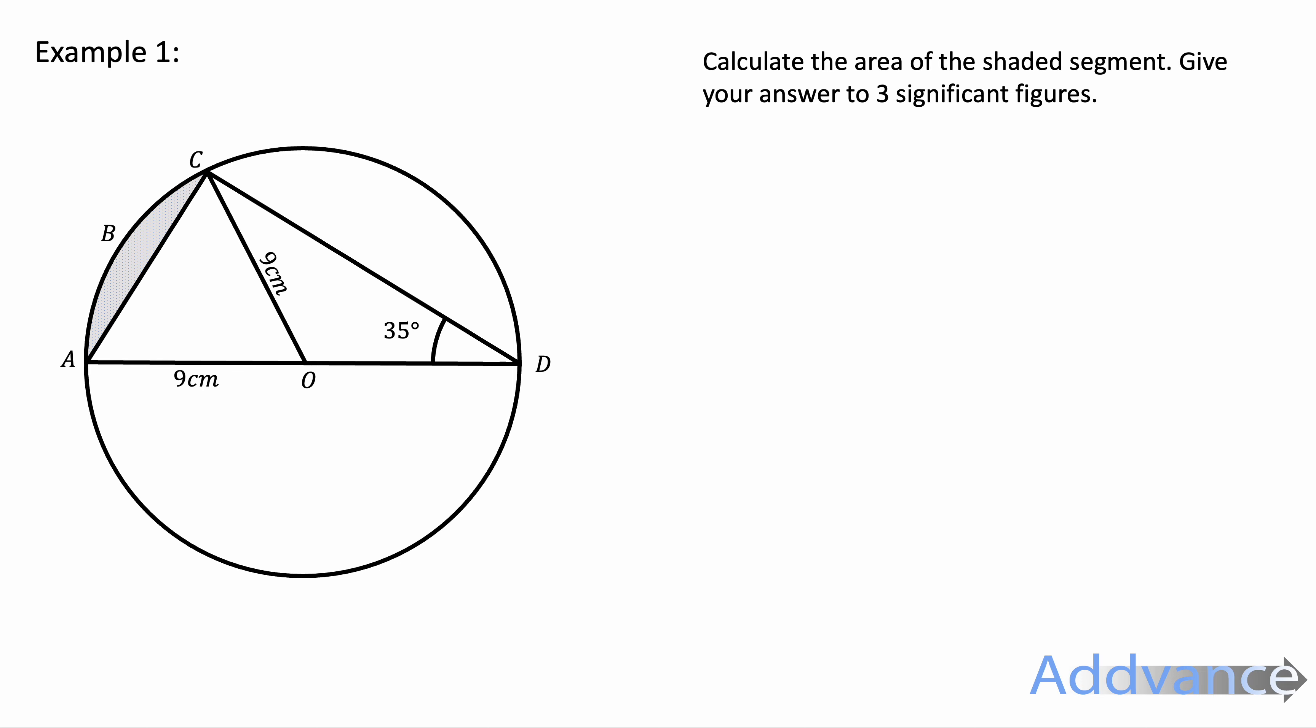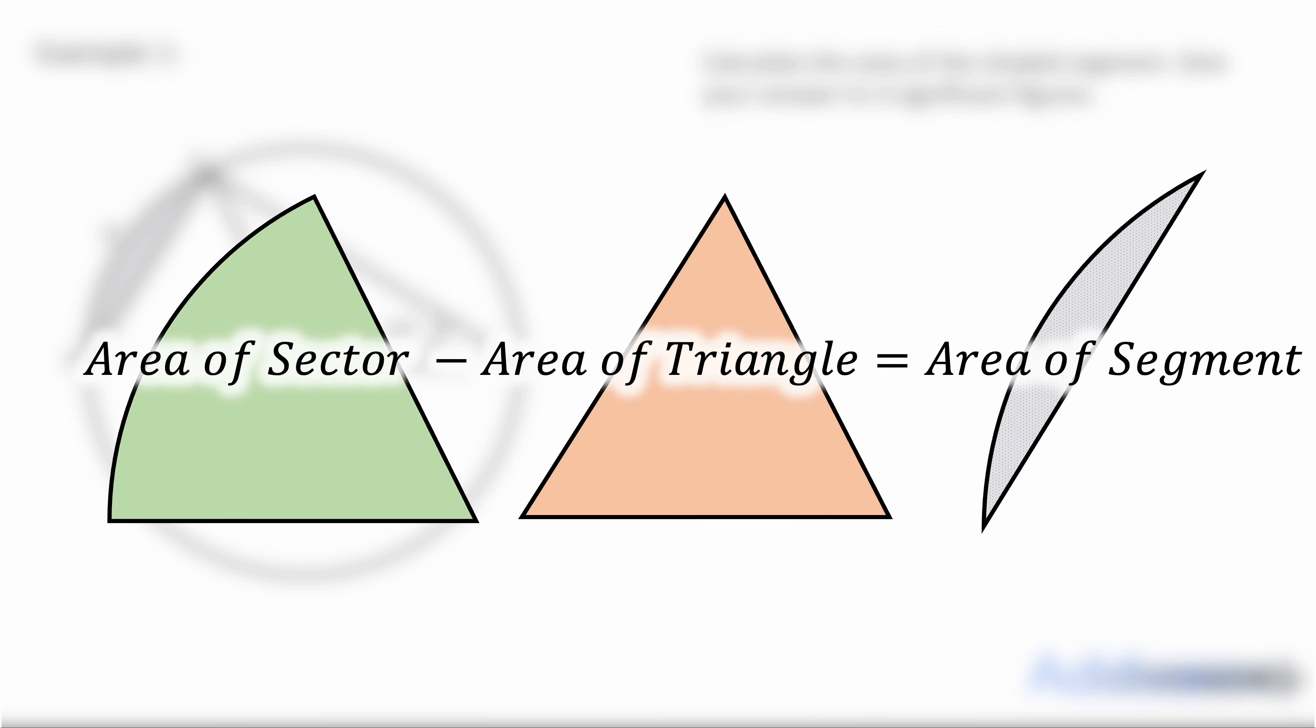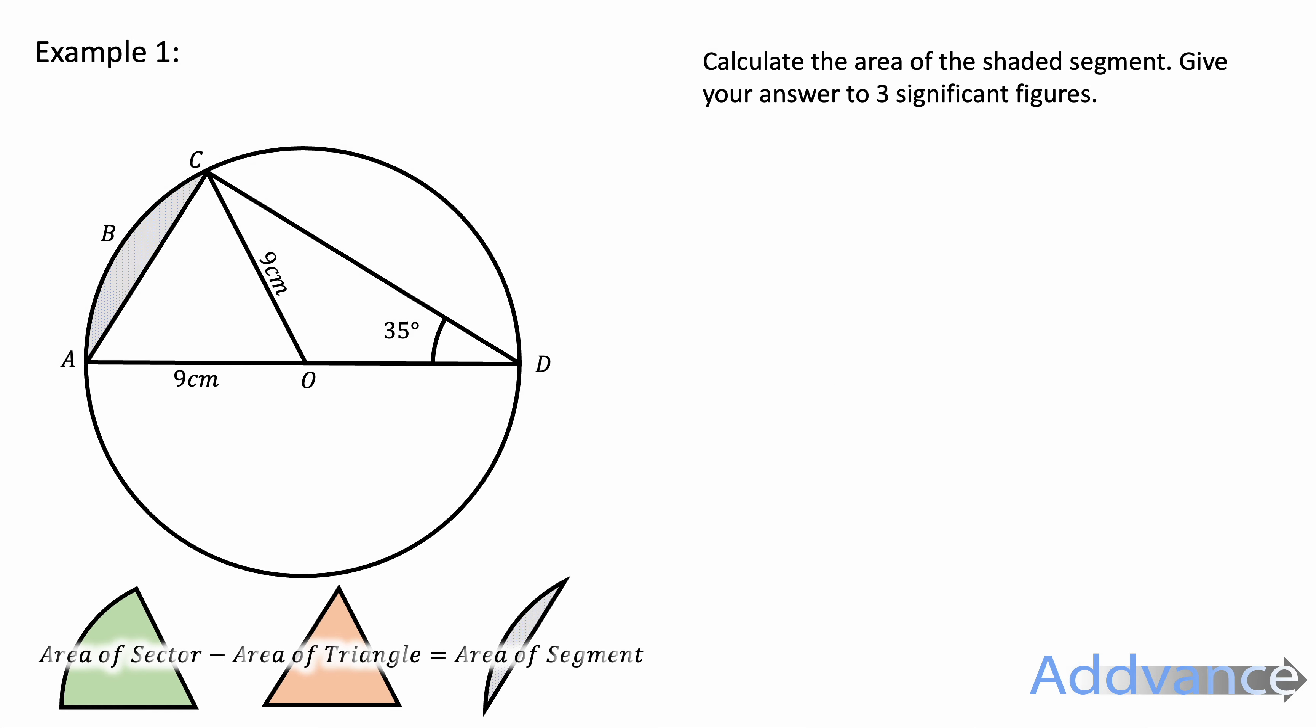Now, I'm trying to find a shaded segment. The shaded segment is made from a sector minus a triangle. And so to find a segment, I do the area of a sector minus the area of a triangle. I need to work out the area of a sector and the area of a triangle.